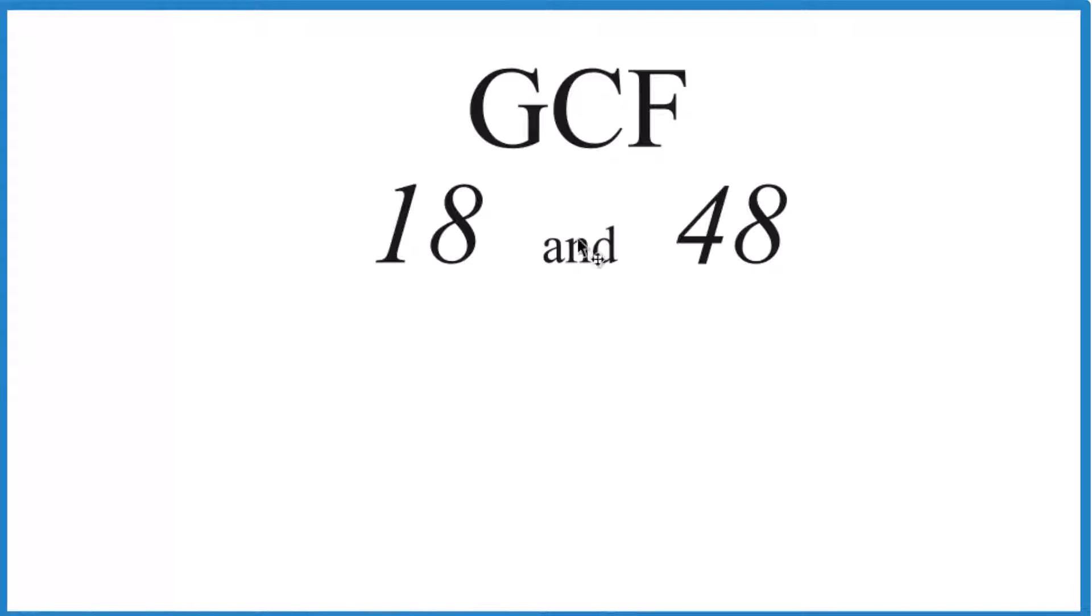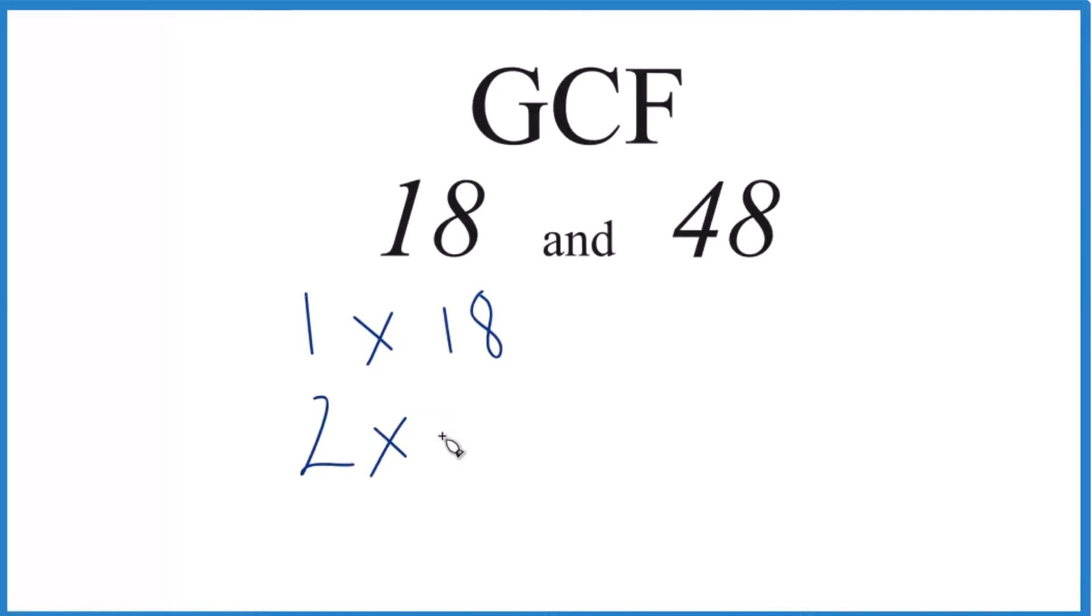So what we'll do, we'll find the factors of 18 and 48, look at the common factors, and then choose the greatest one. So for 18, 1 times 18, that equals 18, 2 times 9, that's 18, 3 times 6, those are the factors for 18.